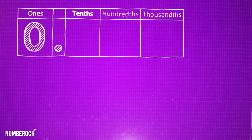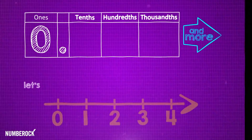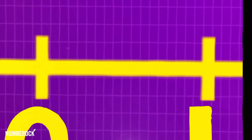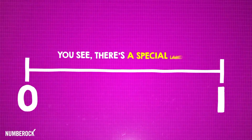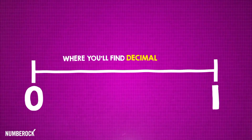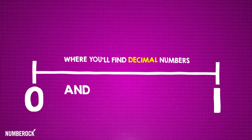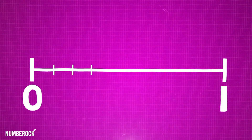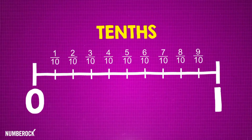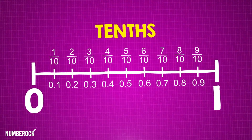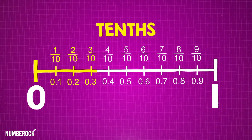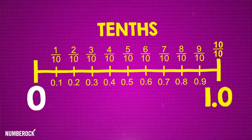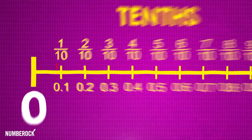We've got the tenths, the hundredths, the thousandths and more — let's imagine a number line to further explore. There's a special land between zero and one where you'll find decimal numbers in every fraction. Between zero and one, make ten intervals; these are tenths written as fractions or decimals. When counting by tenths, after you get to nine, the tenth tenth makes one whole on the number line.